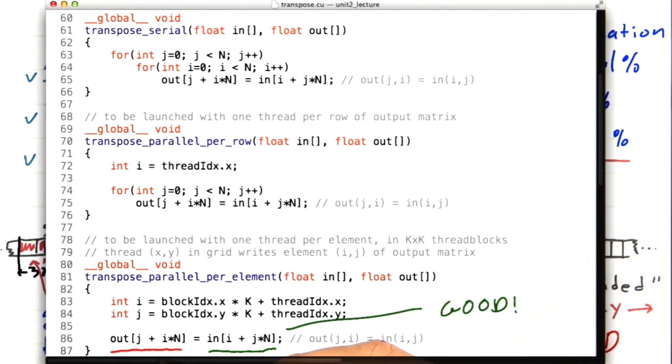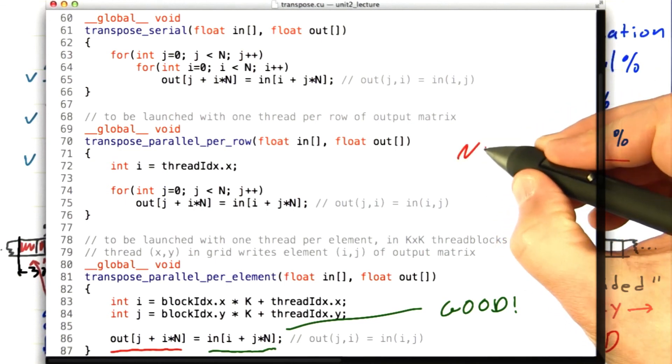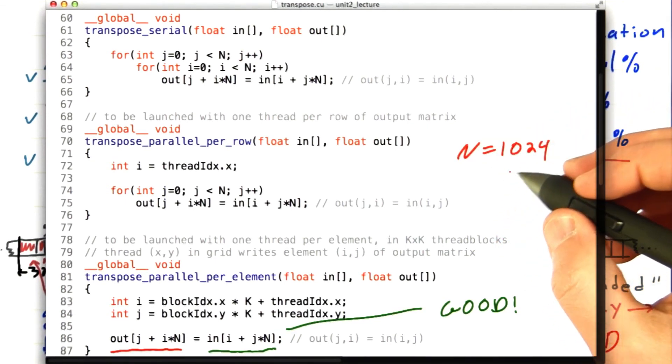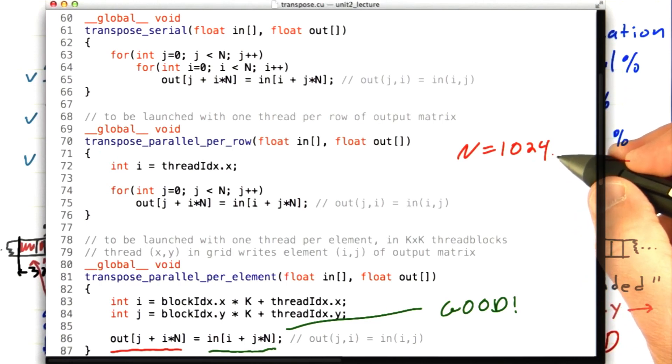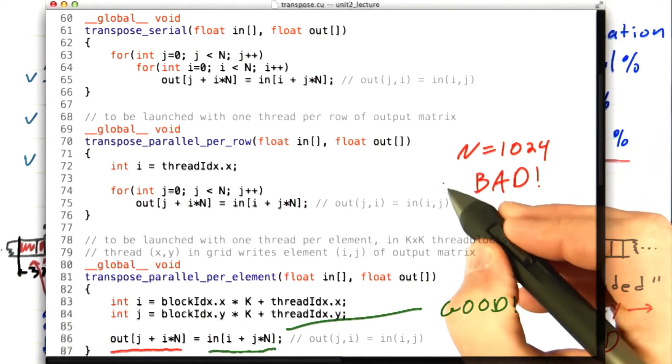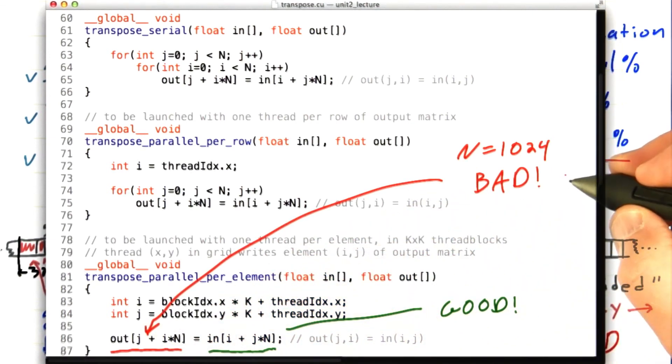On the other hand, when we write the output matrix, adjacent threads, threads with adjacent values of i, are writing to places separated in memory by n. And n was like 1,024. So adjacent threads are writing to memory locations that are 1,024 elements away from each other. This is clearly really bad. This is bad coalescing. This is in fact the root of our problem.